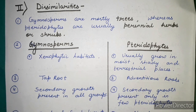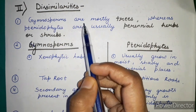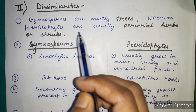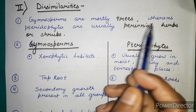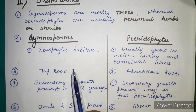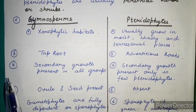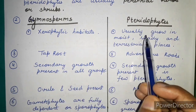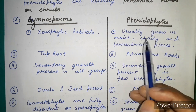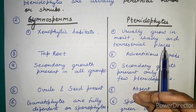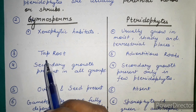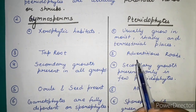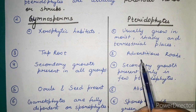Now we will discuss the dissimilarities between gymnosperms and pteridophytes. Gymnosperms are mostly trees, whereas pteridophytes are usually perennial herbs or shrubs. Gymnosperms grow in xerophytic habitats, whereas pteridophytes grow in moist, shady, and terrestrial places. Gymnosperms have a taproot system, while pteridophytes have an adventitious root system.